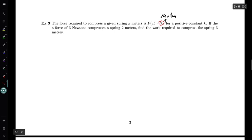So what that tells me is that 3 is equal to k times 2. Well, dividing each side by 2, I get 3 halves equals k. And so applying this into my force function gives me that the force required to compress the spring x meters is going to be 3 halves x Newtons.